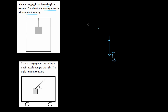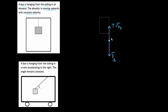How big is the tension? The elevator moves up with constant velocity — no acceleration — so the forces must be balanced. Tension equals the force of gravity. You can call it T or F_T. If the elevator were accelerating upward, you'd need tension greater than gravity. At constant velocity, tension equals gravity and points upward.